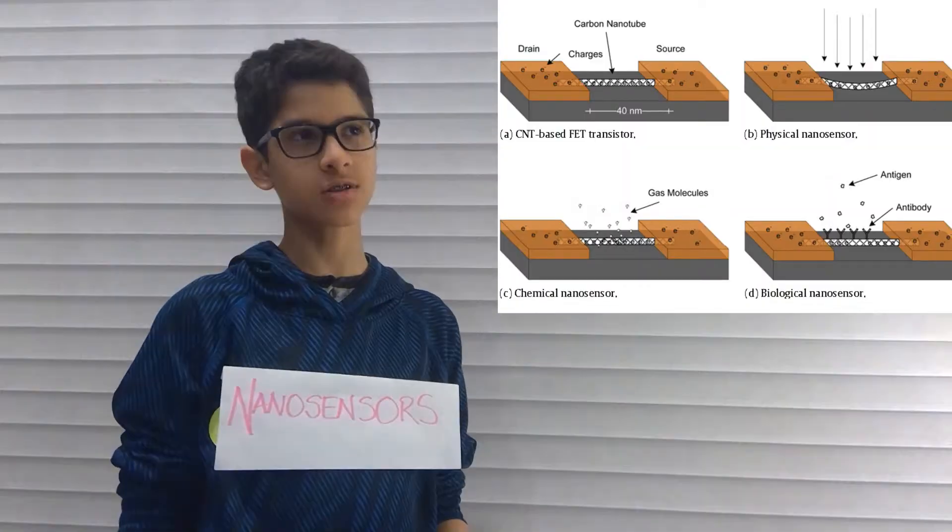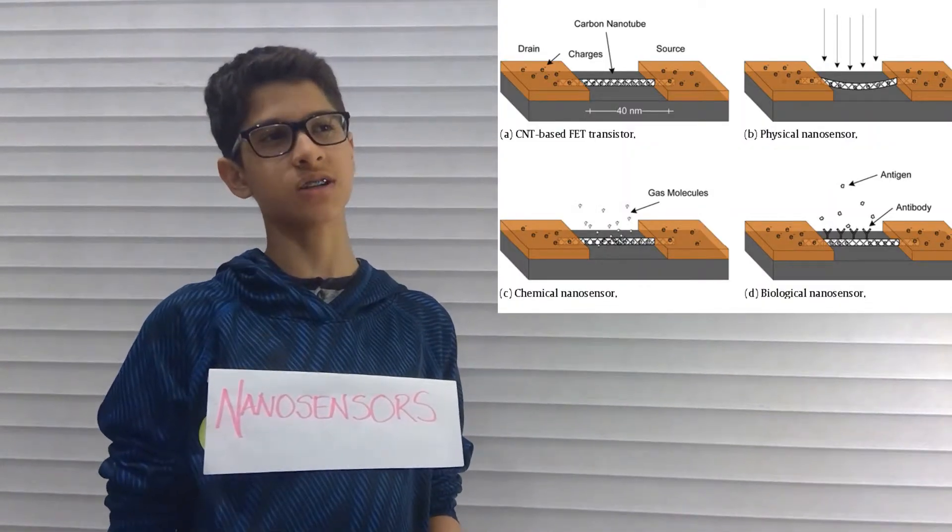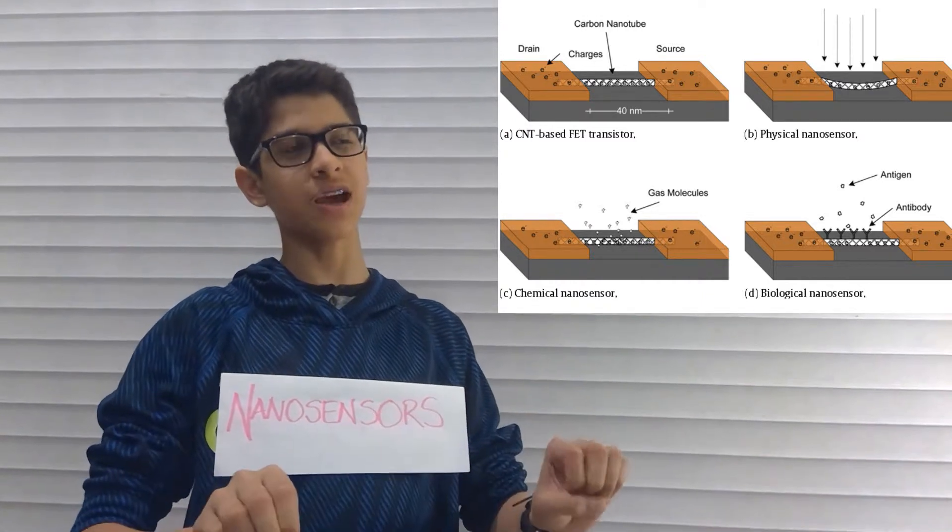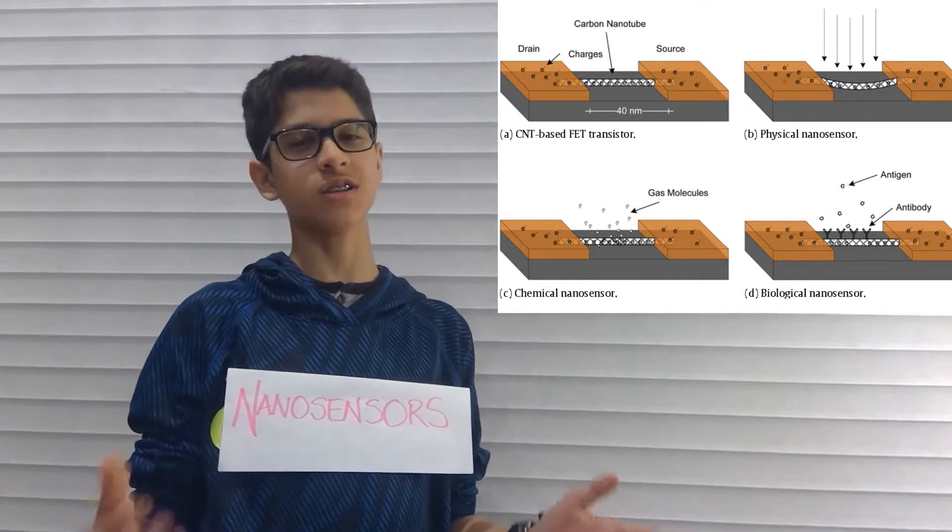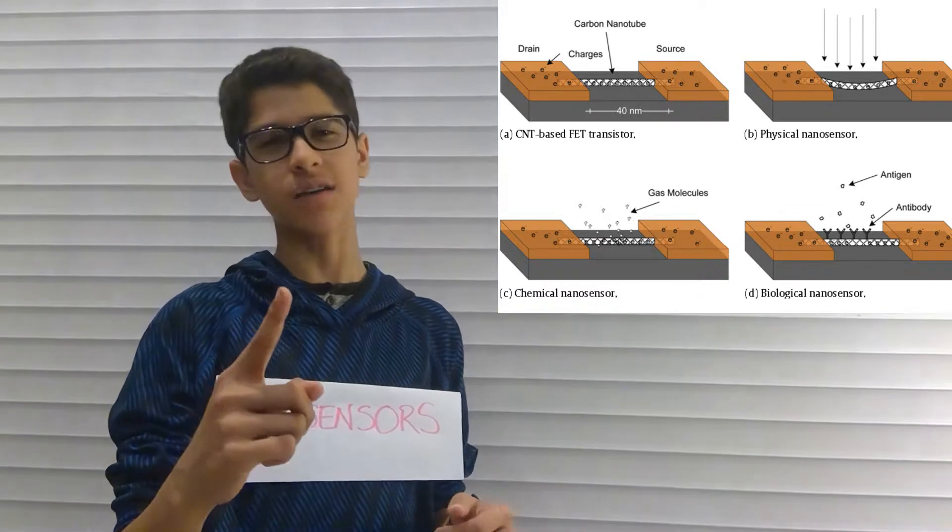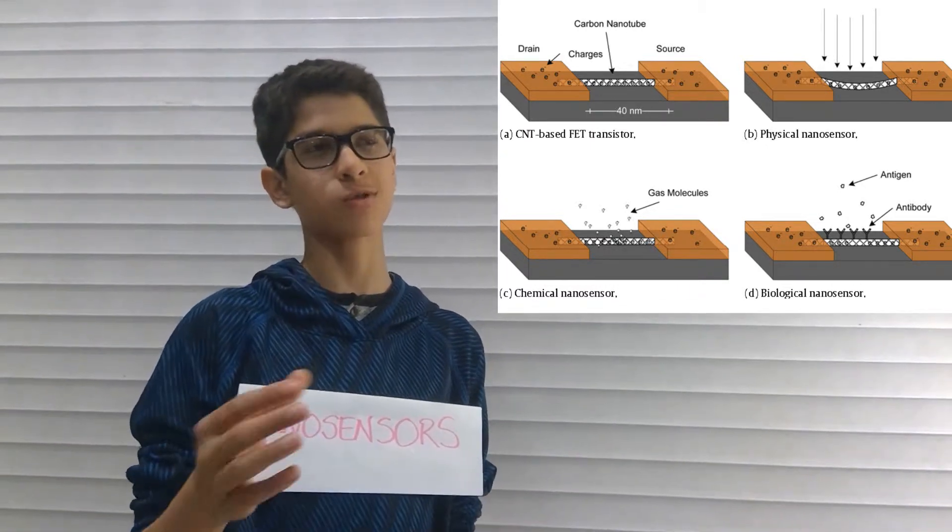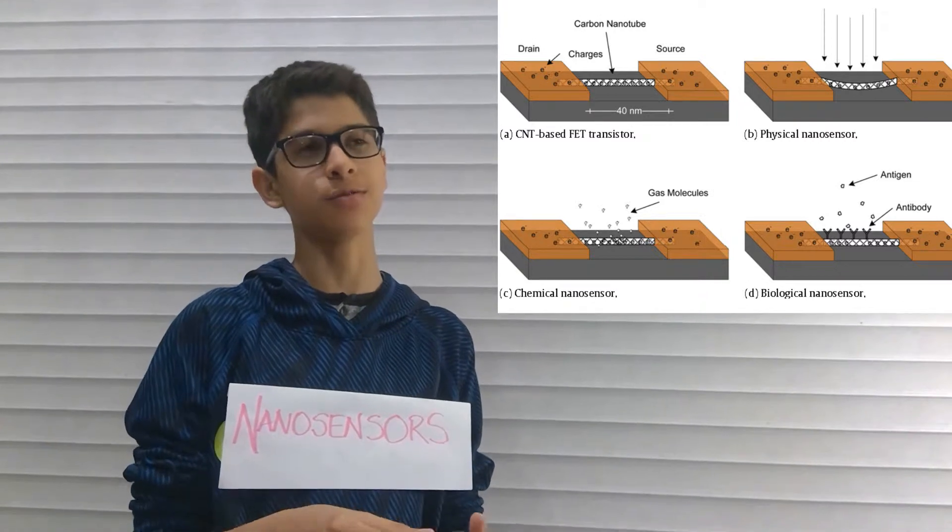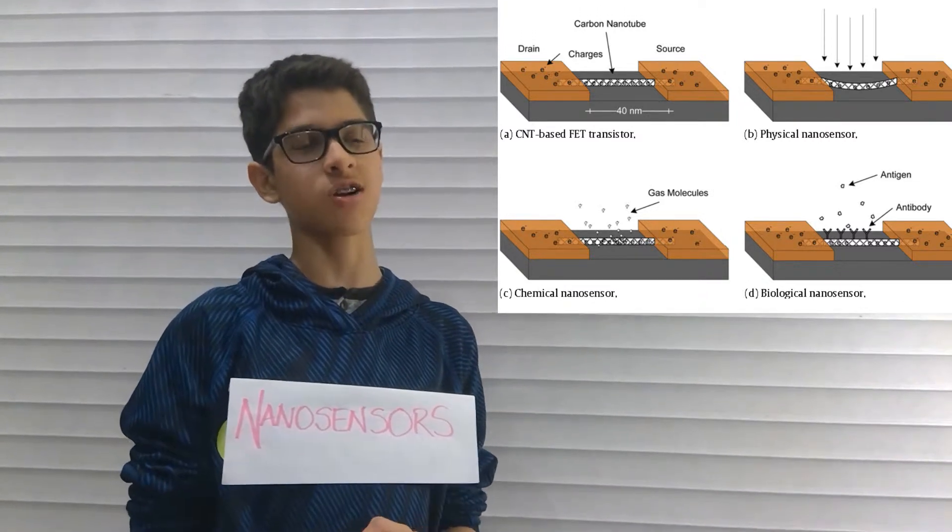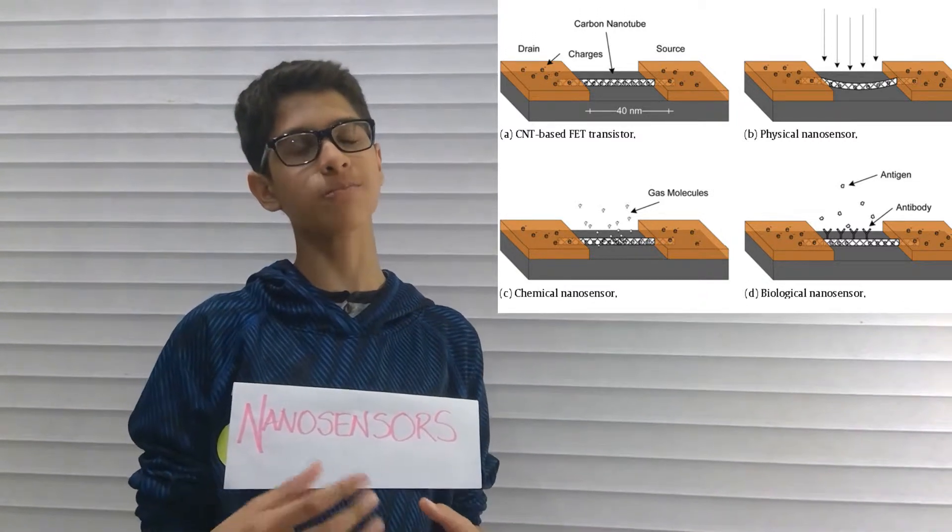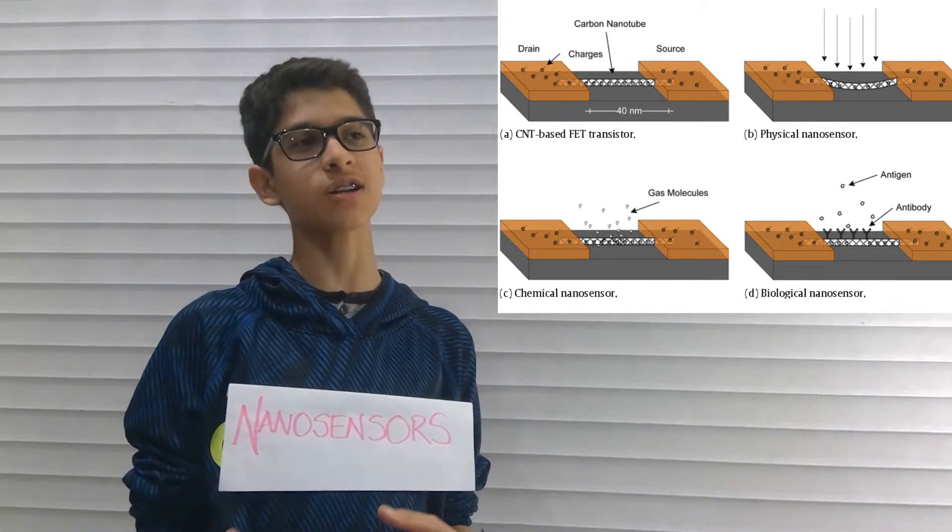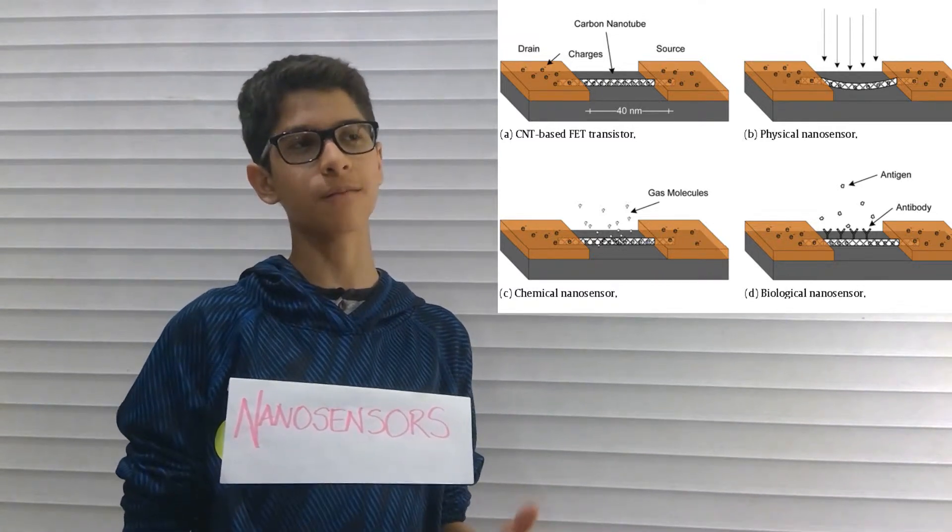There are three main types of nanosensors. They all have a carbon nanotube and electrons on either side. The first type is a physical sensor, which relies on the outside world to actually move its nanotube, causing the change in electrons. The sensor will then pick up on that change of electrons and transmit the data to the user.